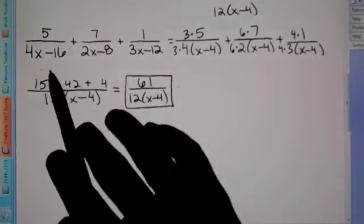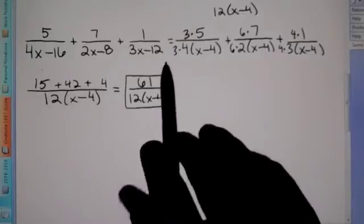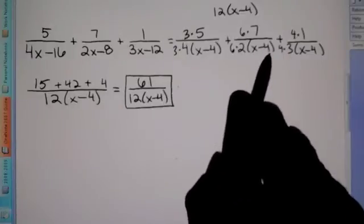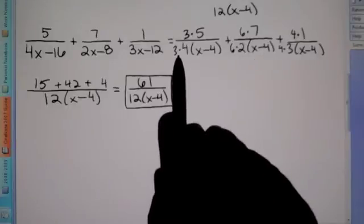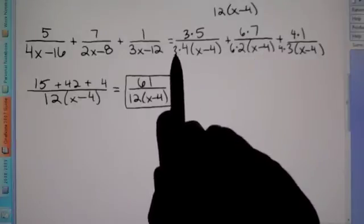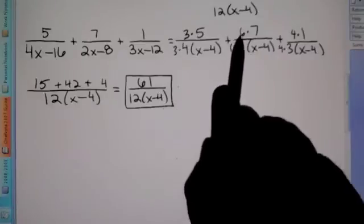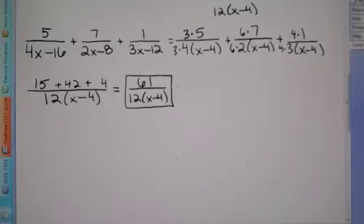What we did is we factored just the denominator so we could find a common denominator. We saw a 4, a 2, and a 3 — the smallest number all of those go into is 12. So we changed each fraction to have 12 by multiplying by 3 top and bottom, by 6 top and bottom, and by 4 top and bottom. Once we did that, we could combine the numerators.